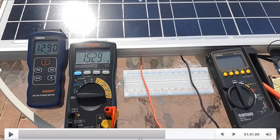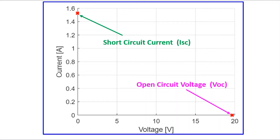Similarly, I am going to measure the short circuit current. You can see it's 1.529 amperes on my ammeter. I will take that reading as well, and I am going to plot it on a VI graph.